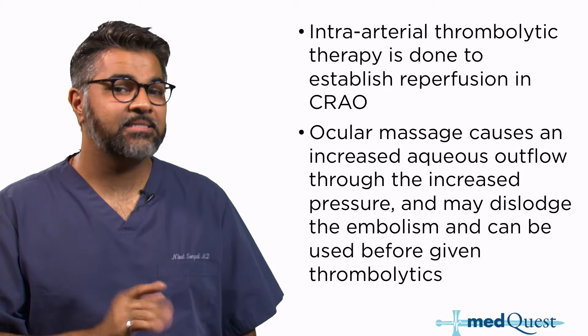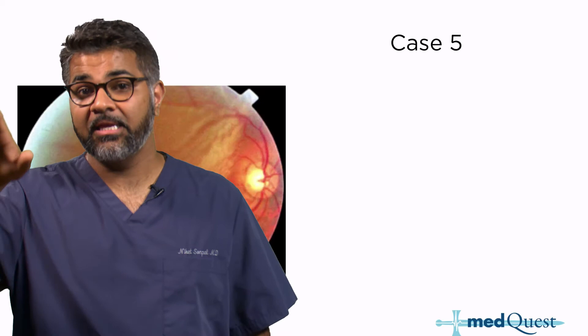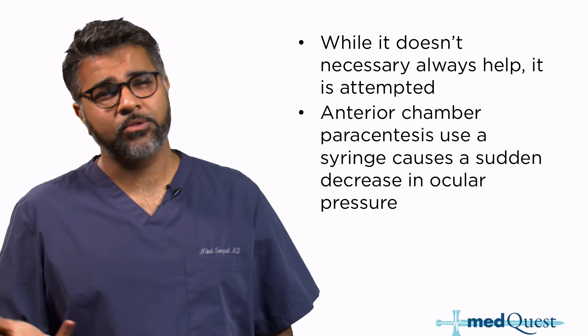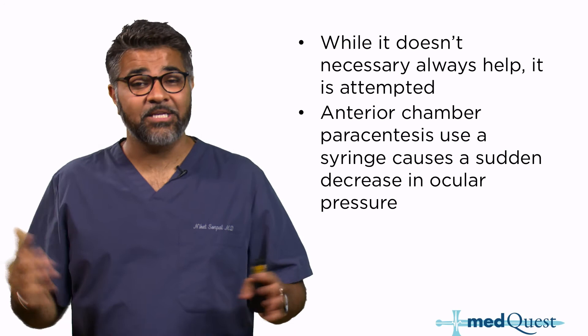Anterior chamber paracentesis — which involves inserting a needle into the eye to pull out fluid and drop the pressure, hoping the clot will dislodge — is another potential option. But with directed thrombolysis available, that is the first-line therapy. Anterior chamber paracentesis is not attempted until after intra-arterial thrombolytics have been given.